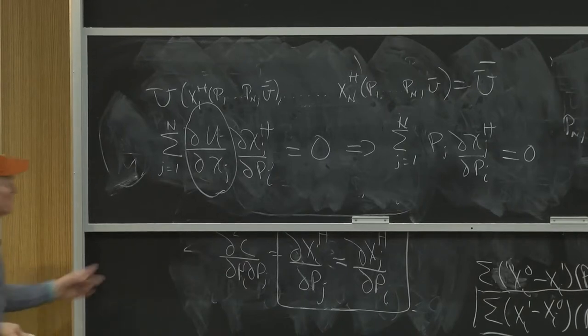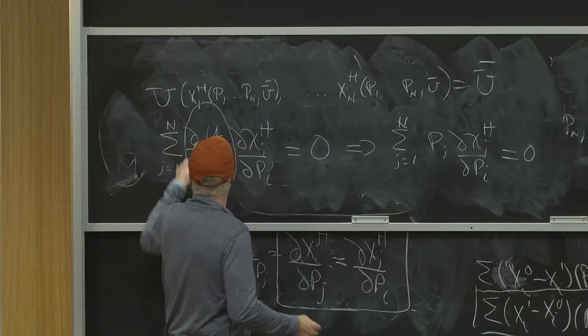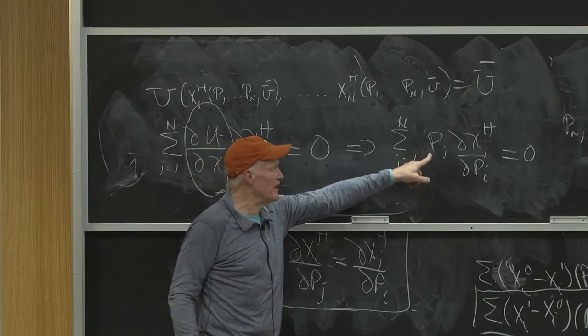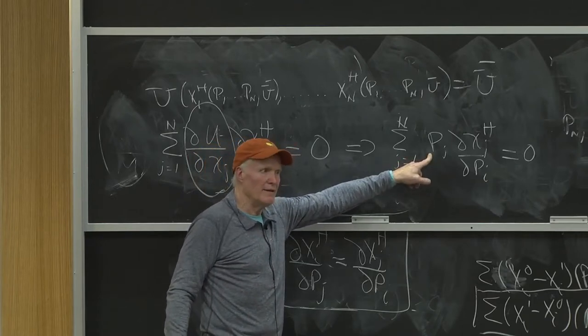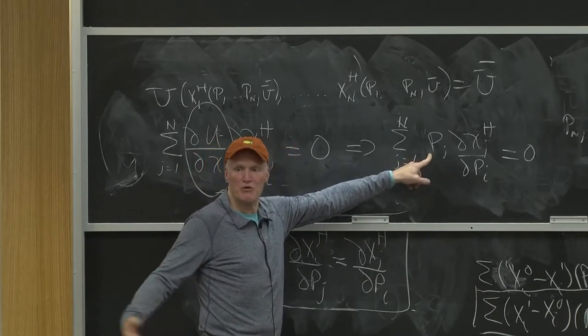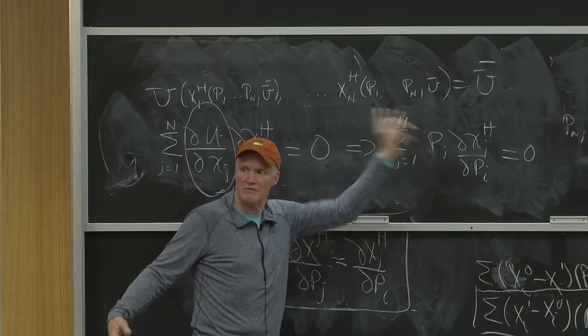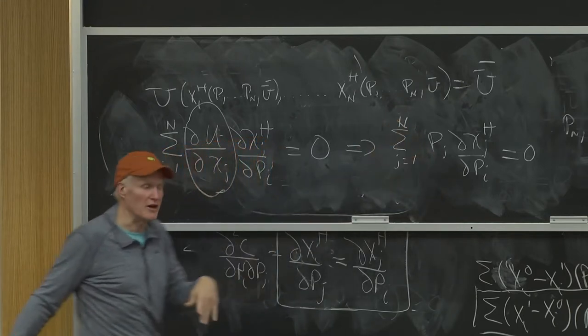Now, you could have said, well, you really got to put, marginal utility is not exactly equal to pj. It's equal to lambda pj or 1 over mu pj. But who cares? I can multiply by mu because it's 0 on the other side.